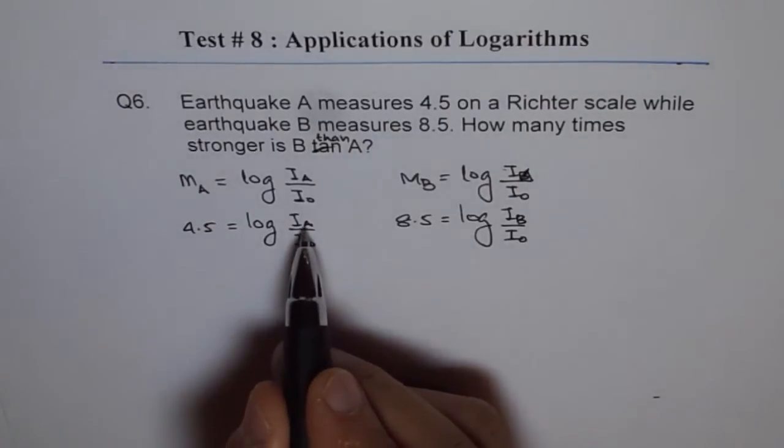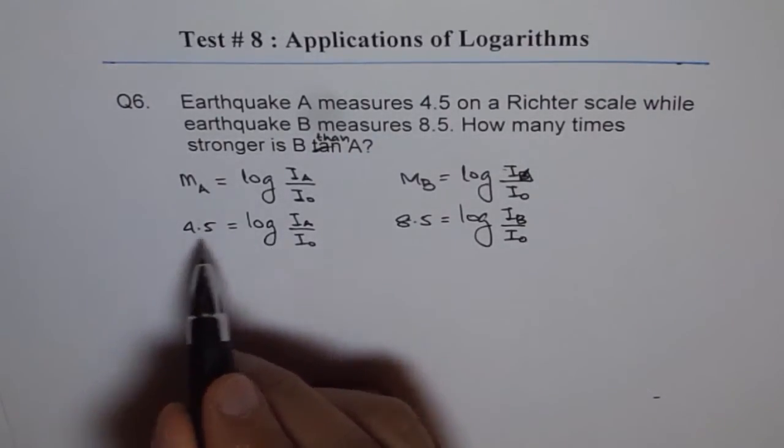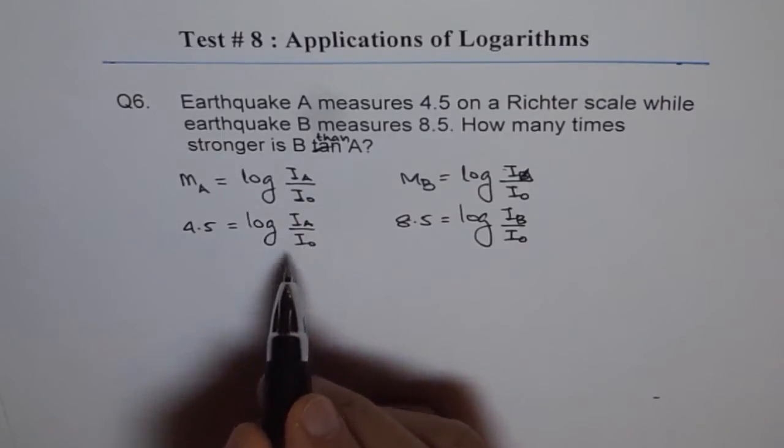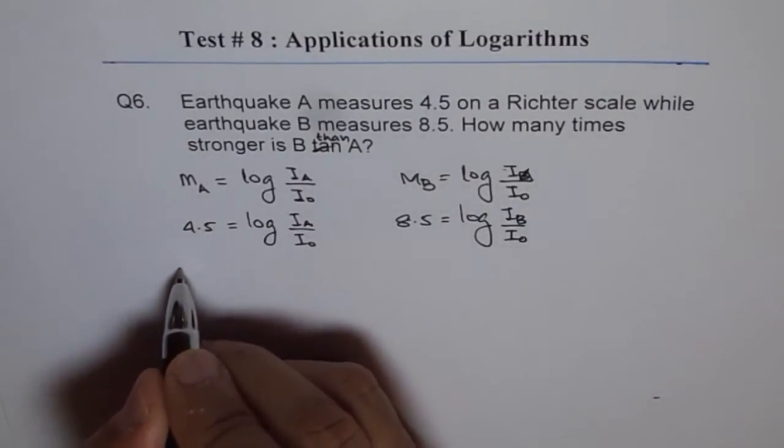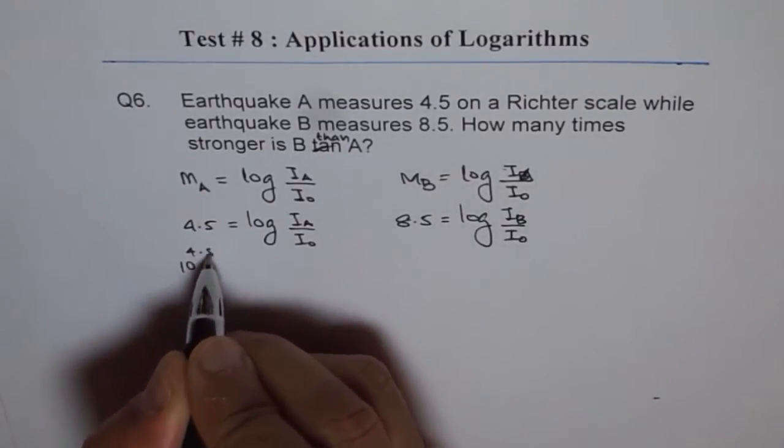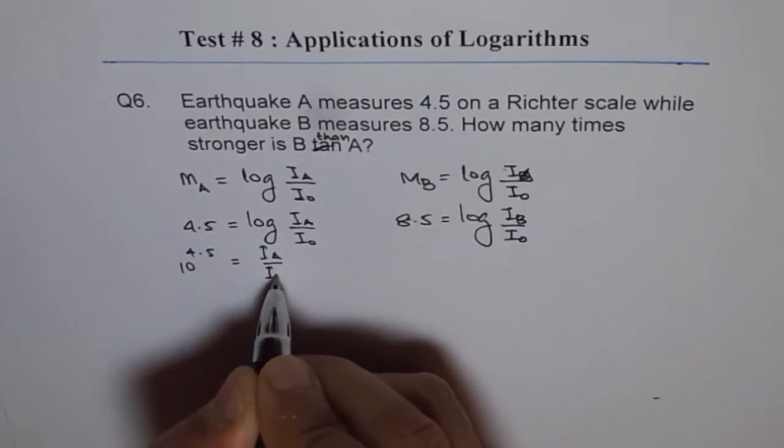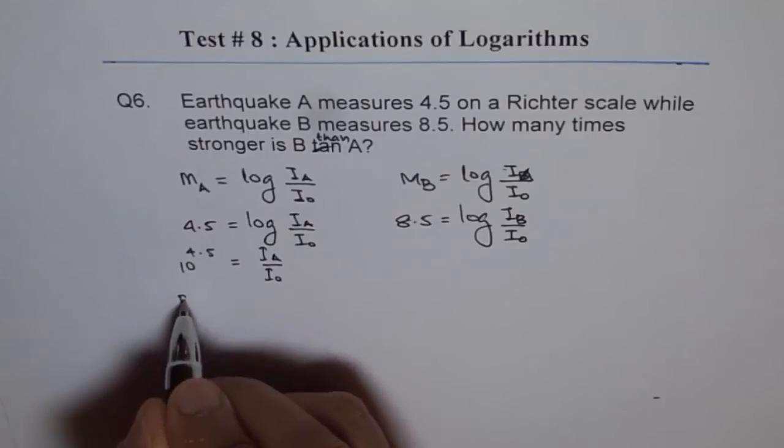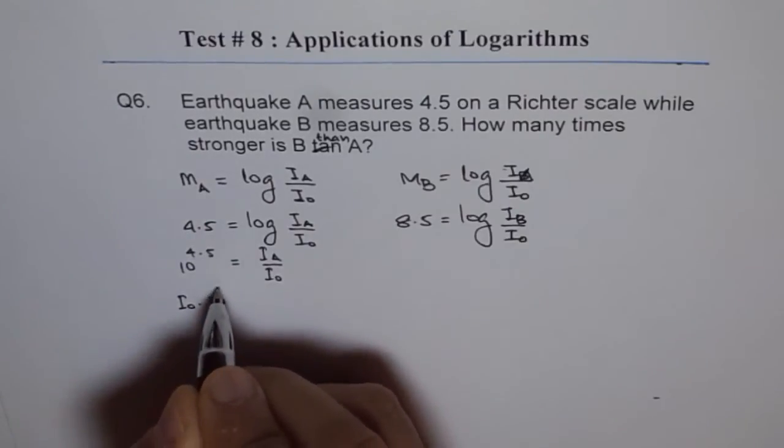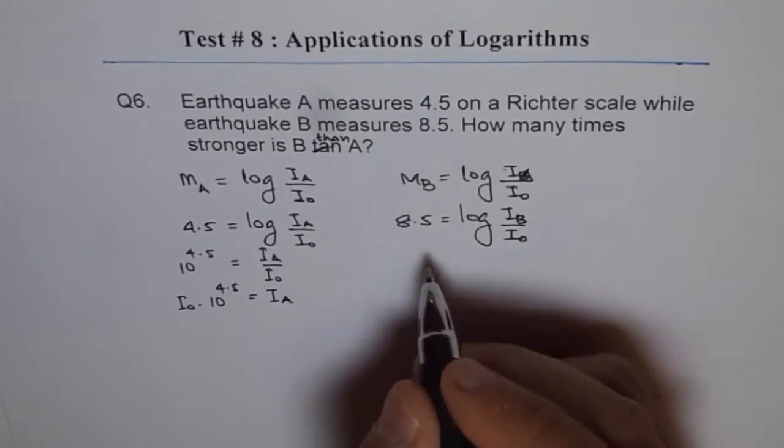So, from here we can write what is I A equals to? So, I A equals to 10 to the power of 4.5 times I0. So, we will do it in 2 steps and we will write 10 to the power of 4.5 equals to I A over I0 and therefore I A is equals to I0 times 10 to the power of 4.5. That is I A.